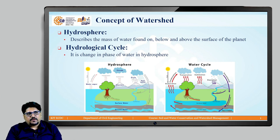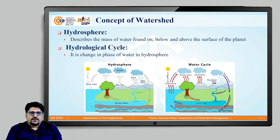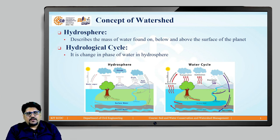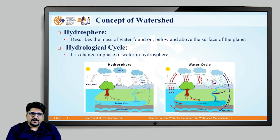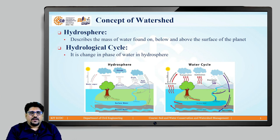When we talk about watershed, we first have to understand the concept of hydrosphere and the hydrological cycle. Within a watershed, there are different resources such as land, vegetation, minerals, and most importantly, water.